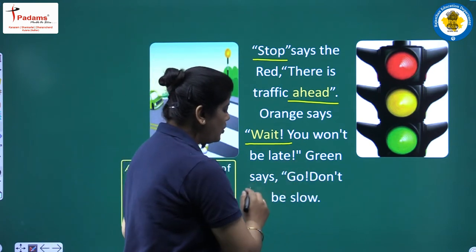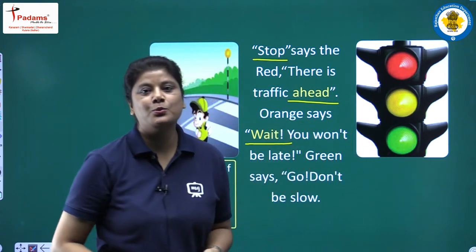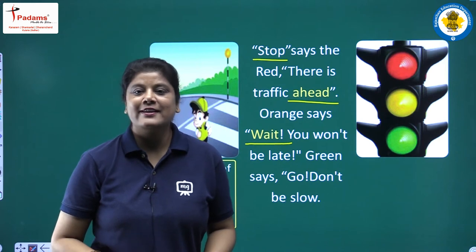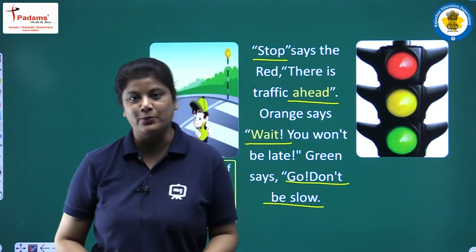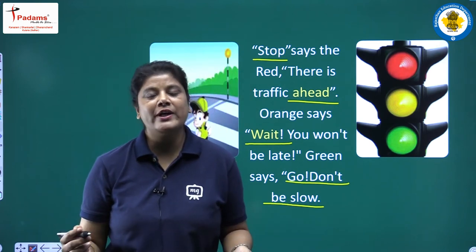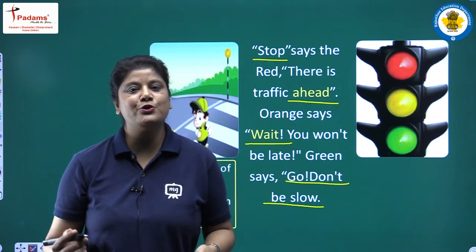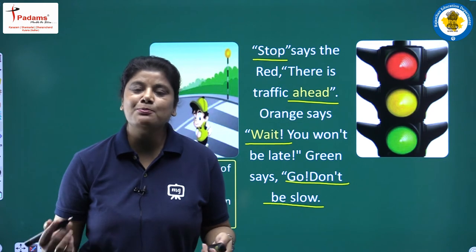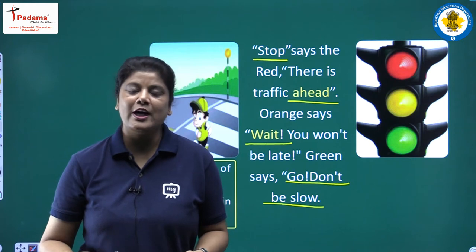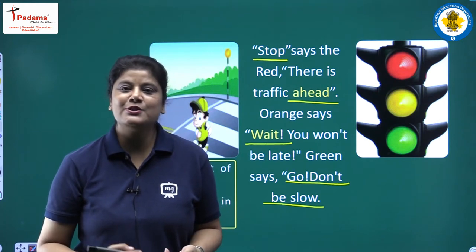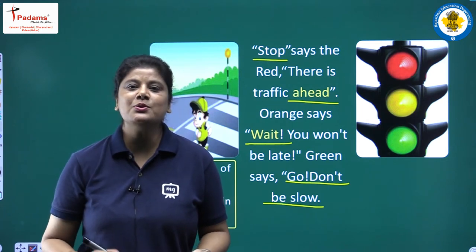Green says, go — don't be slow. Green light क्या कहती है? Go, don't be slow. Means now you are ready to go. Green light हो गई means अब आपको चल देना चाहिए। अपनी speed normal रखिए और आगे चलिए। Red light says to stop, orange says to wait, and green says to go.